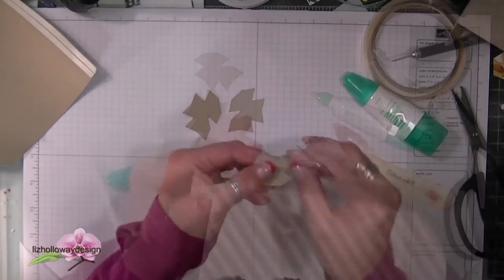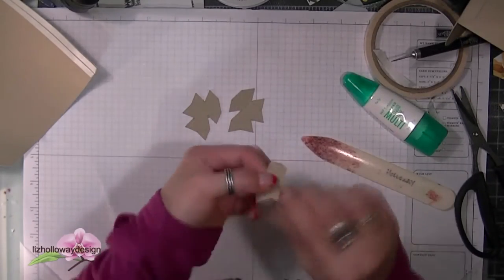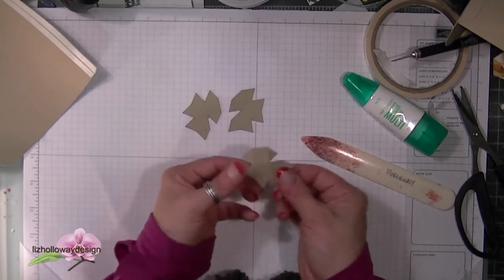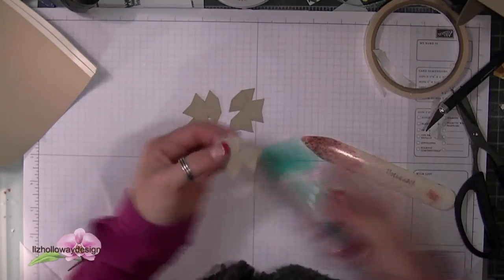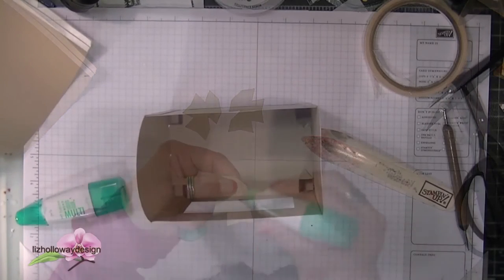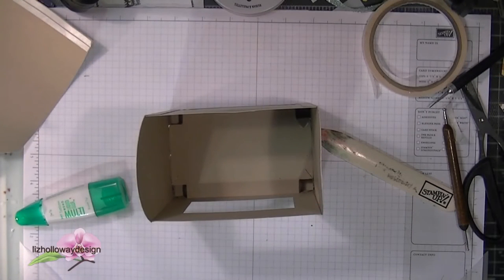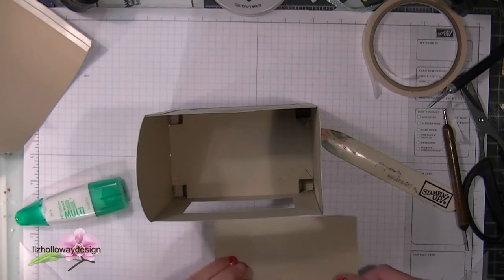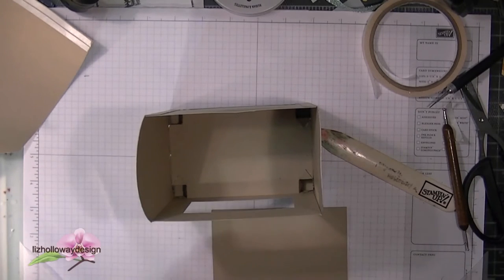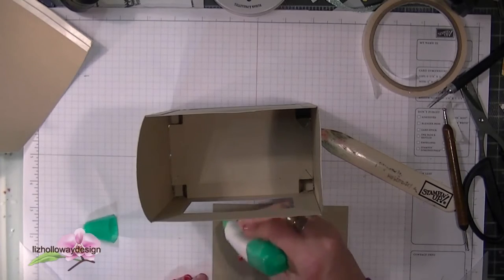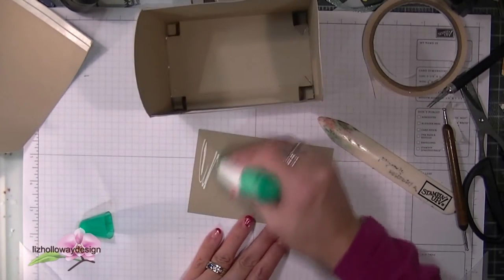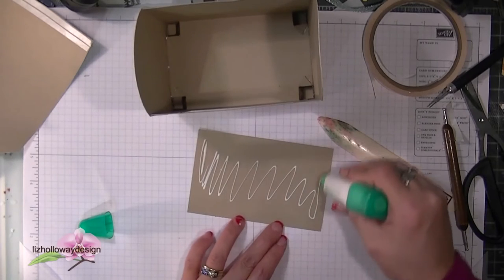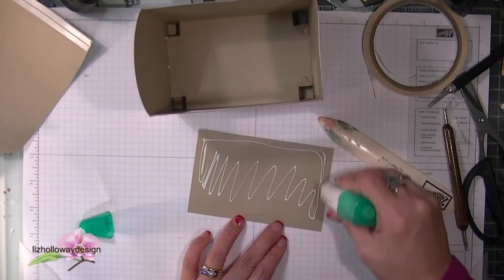You can stop the video now and repeat the other three feet. Again, take your time. When your feet are all secured, your bottom should look like this, where all the tabs are glued down to the bottom. The next step is you're going to take your one extra piece and glue the bottom into place so that it holds all your tabs.